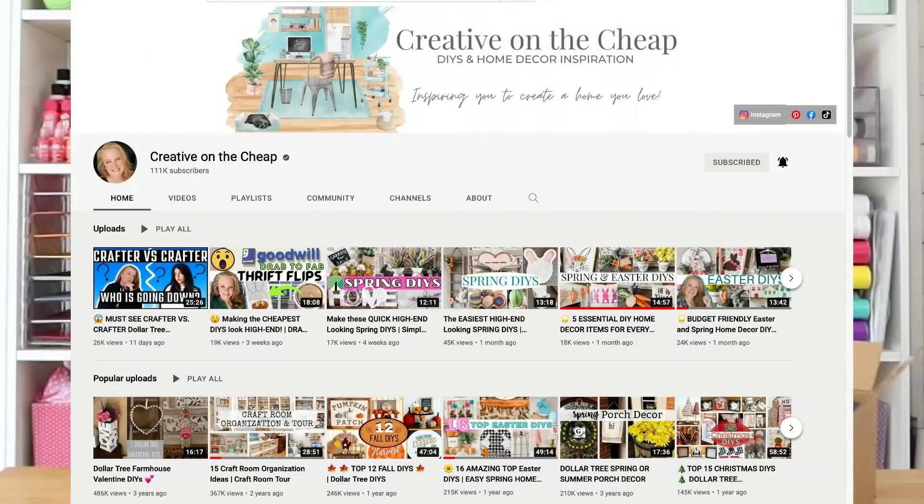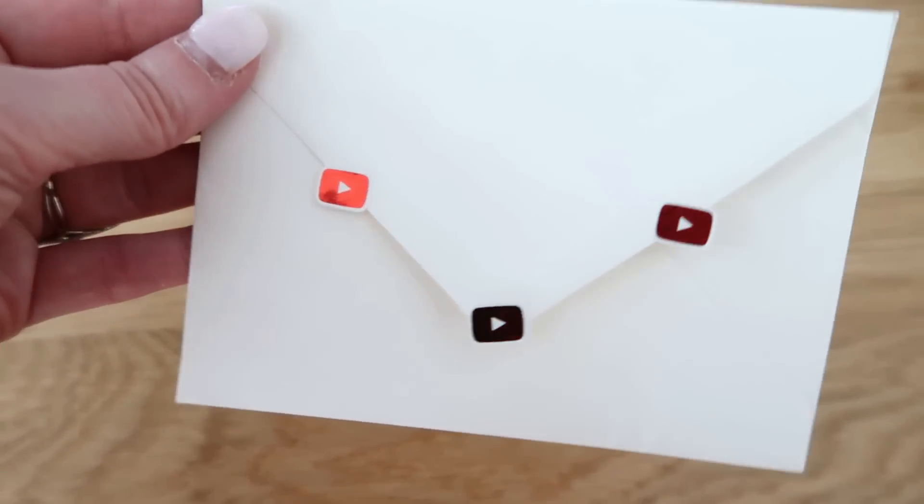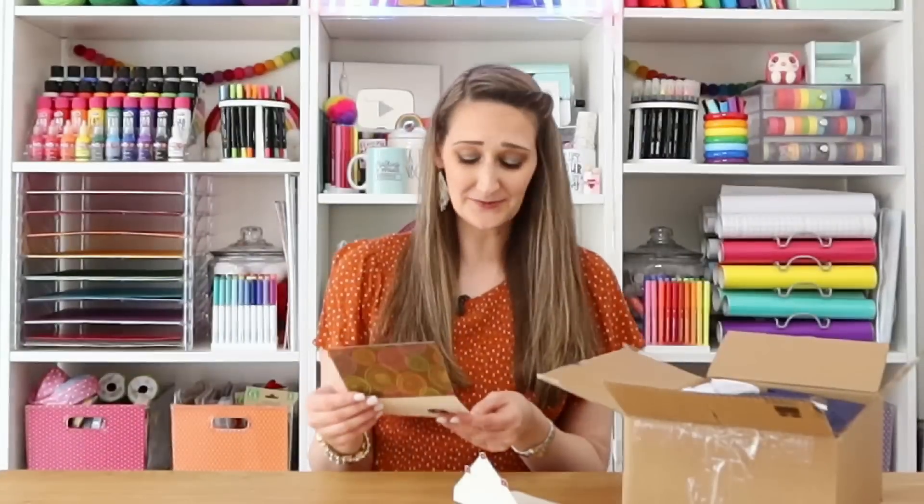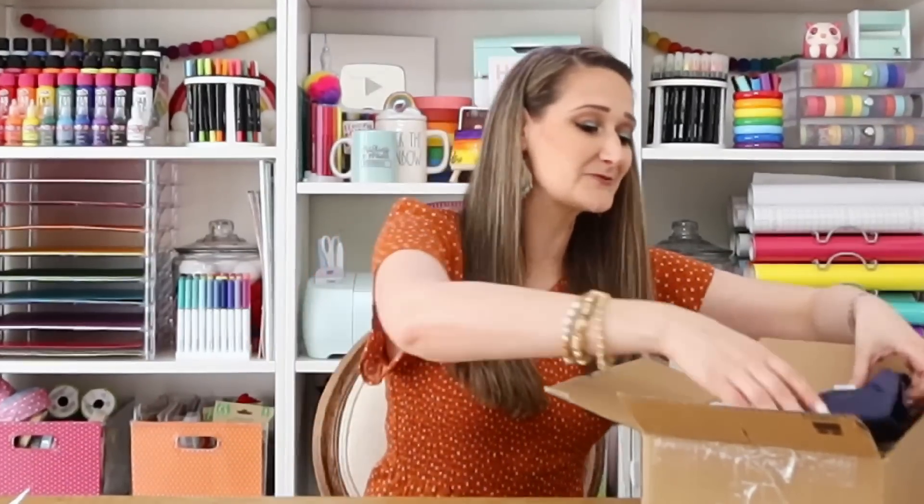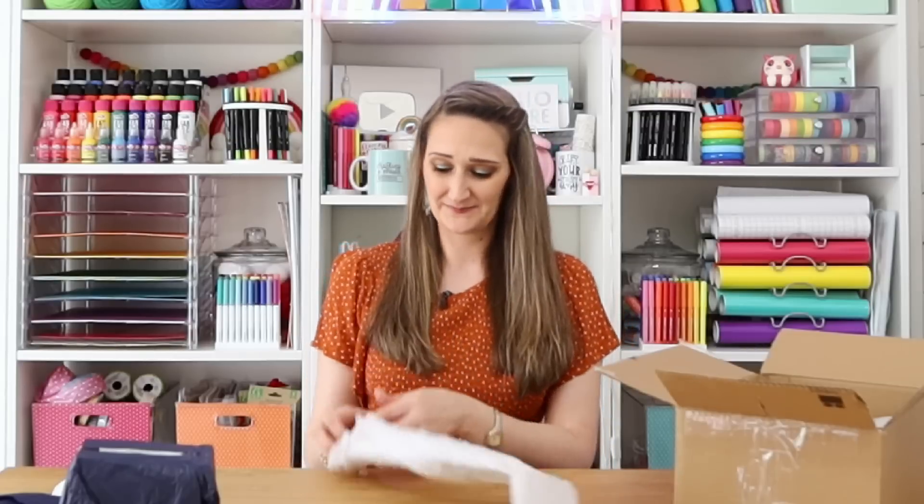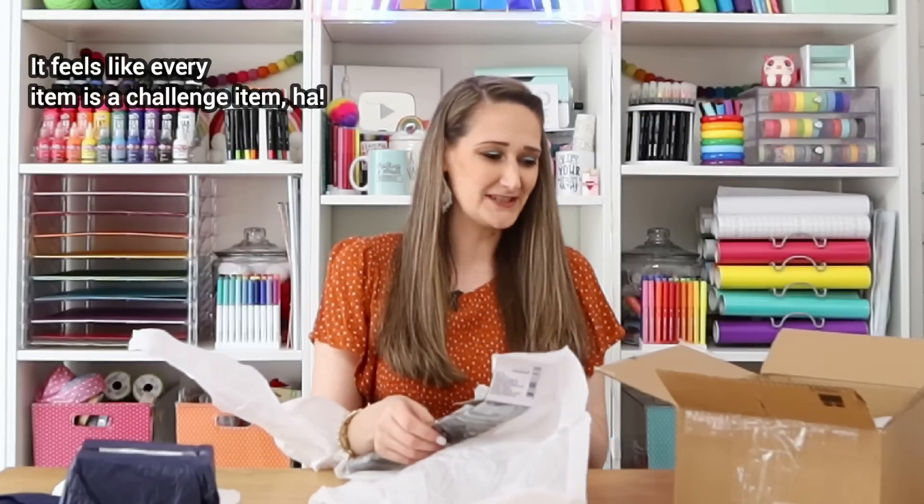I have no idea what's in this box. Caitlin said she was nice to me, but you guys will have to be the judge of that. And the way I like to do this is to dive into this box and show you everything. Let's start with the card that I saw on top. I have to say those are the cutest YouTube stickers I've ever seen. Caitlin writes: Hey girl, I can't wait to see what you come up with using these random items. Challenge items are wrapped in different color. I tried to be nice.